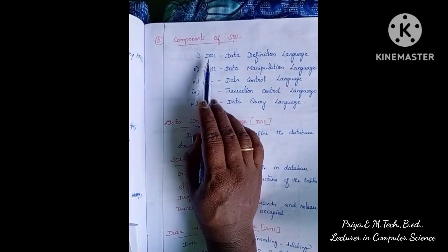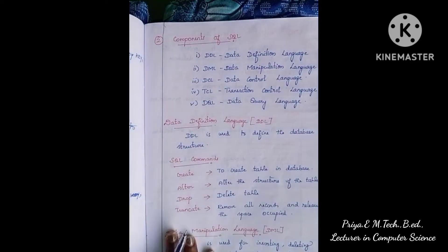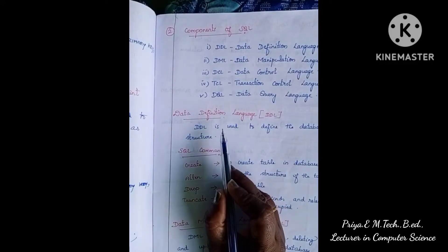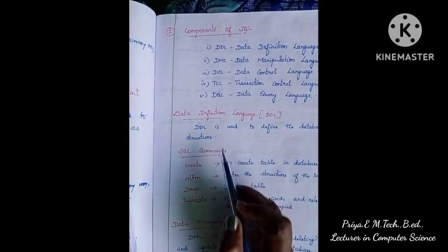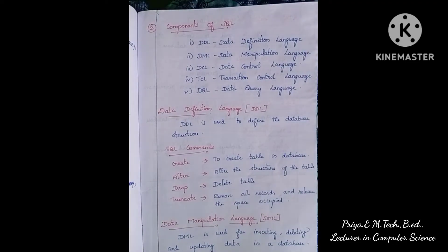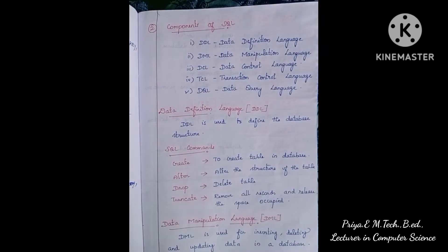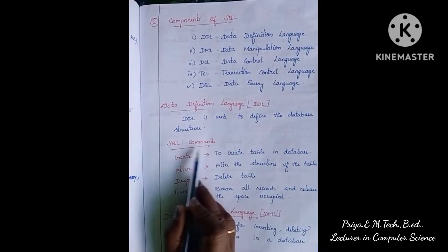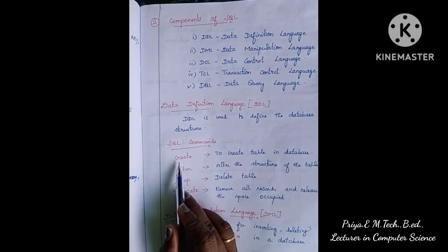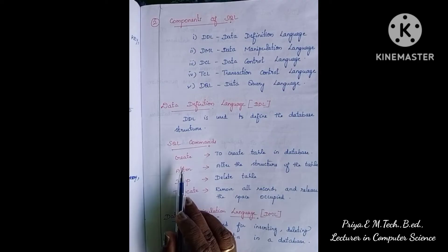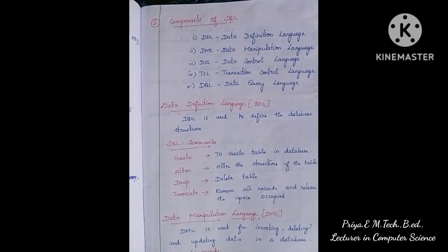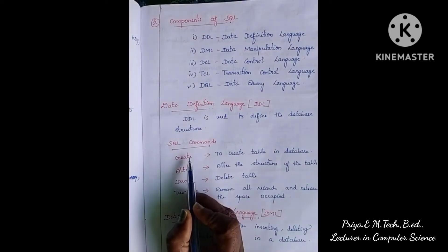In Data Definition Language (DDL), the database is used to define the database structure. If you want to define the database structure or perform deletion, you use DDL commands. For example, the CREATE command allows you to create a table or create a database.